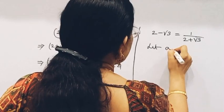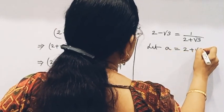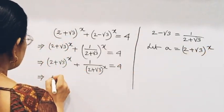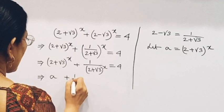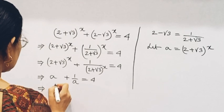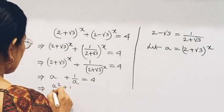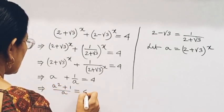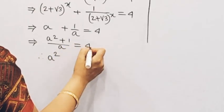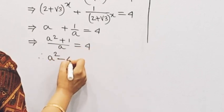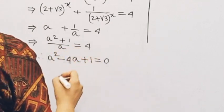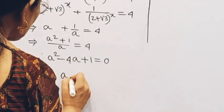Let a equal to 2 + √3. Then a squared minus 2a plus 1 is equal to 0.